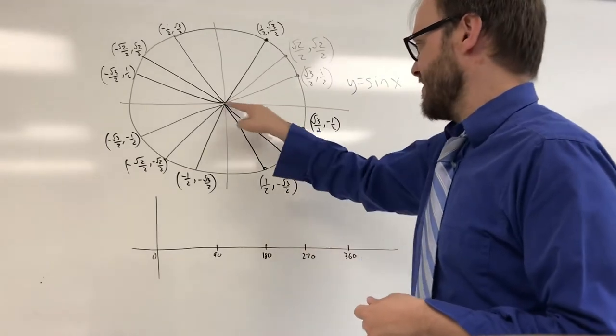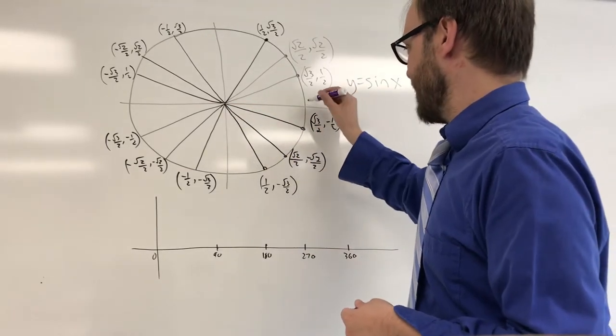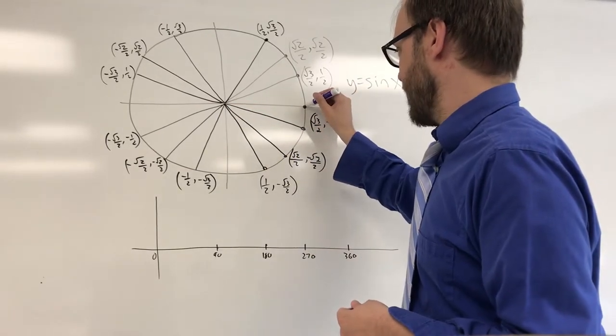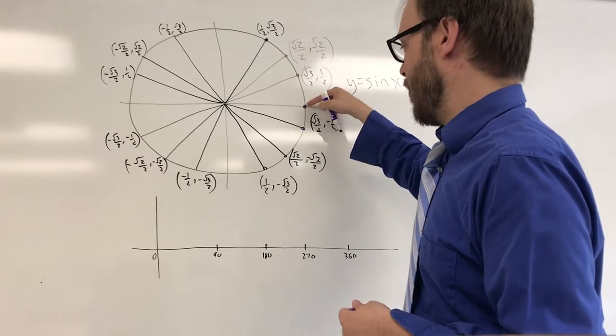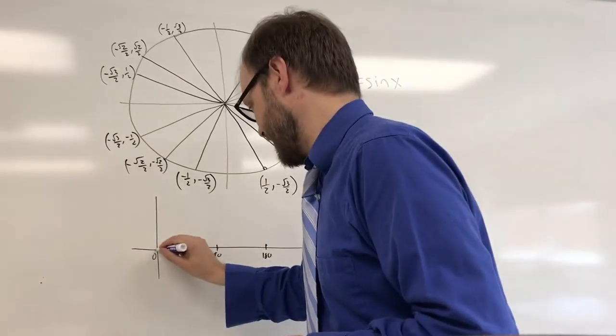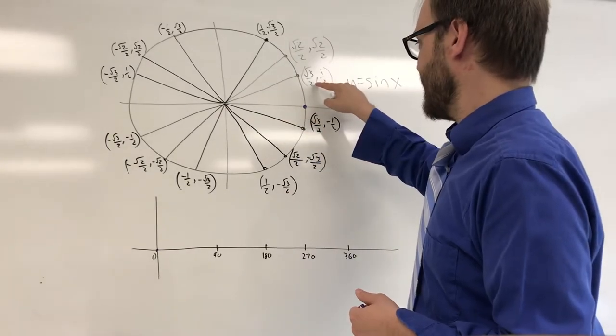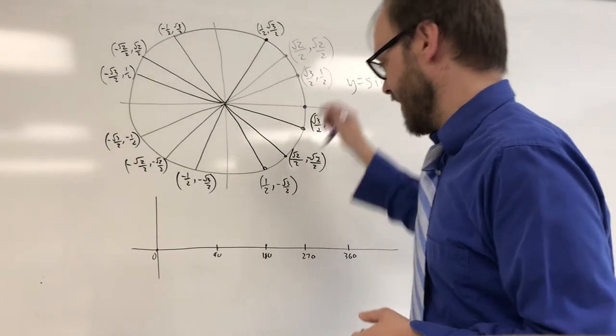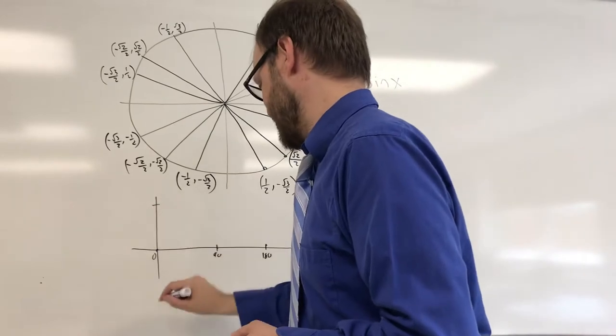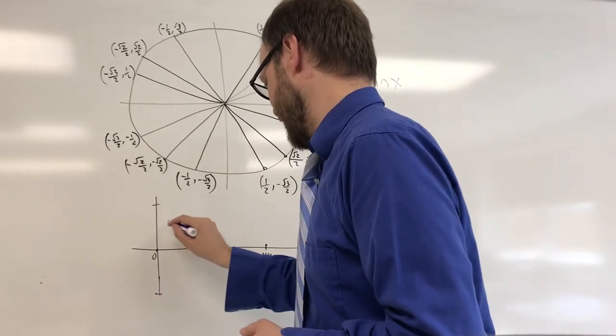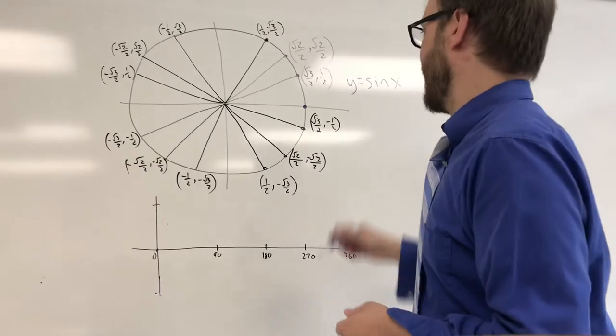So if we come over here at a zero-degree angle, sine of zero of course has a zero y-coordinate, so sine of zero ends up being zero. Sine of 30 degrees has a y-coordinate of one-half, so if this is one and negative one is down here, maybe we're plotting a point about right there.